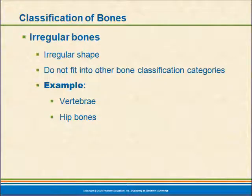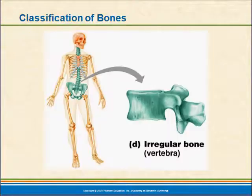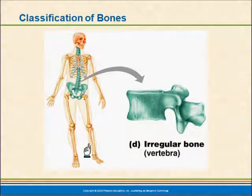Irregular bones have a lot of lumps, bumps, and projections coming off of them — muscle attachments or openings for things to pass through. They don't really fit into other bone classifications. Examples include the vertebrae, which have spinous processes, transverse processes, and foramina, as we saw in the lab. Hip bones are another example of these irregular bones — you've got this body structure with spinous processes, transverse processes, all this stuff coming out of it. We couldn't really classify it as one shape or another.